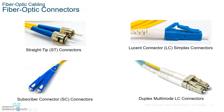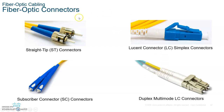The different types of fiber connectors include the straight tip (ST), the subscriber connector (SC), and the LC — the lucent connector. You'll most commonly see the straight tip or the LC connector. On the CCNA test, they actually show pictures and ask you what type of connectors they are, so you need to be able to recognize these.